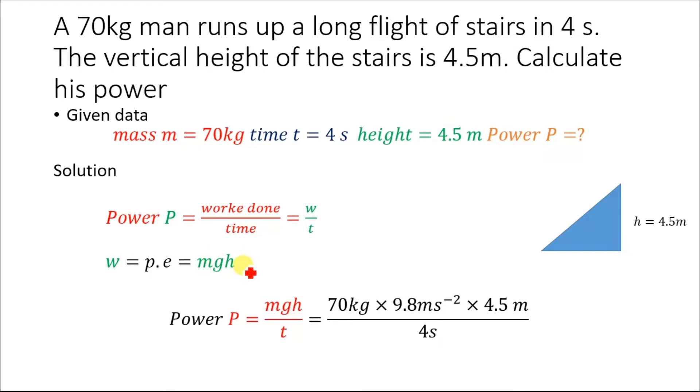Now we are going to replace the value of w in this equation with mgh. So we will have power P equals mgh divided by time. Now the mass is given as 70 kilograms. We know the value of gravitational acceleration, which is 9.8 meters per second squared.